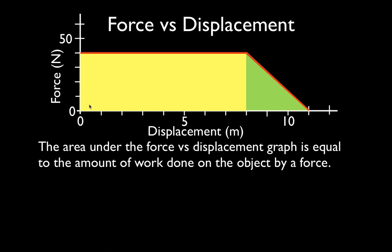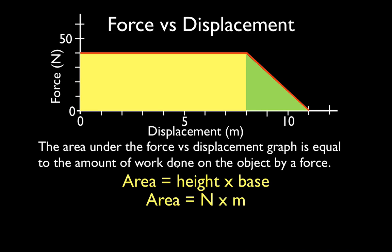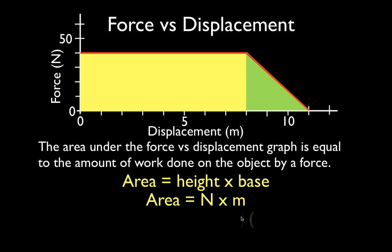Let me show you why the area under the curve equals the work done. The area of the rectangle is height times base. The height is measured in newtons and the base is measured in meters, so we're multiplying newtons times meters. A newton times a meter is equal to a joule, and a joule is the unit for work — so the area does equal the amount of work done.